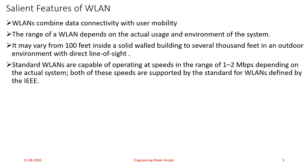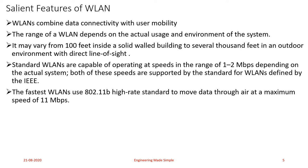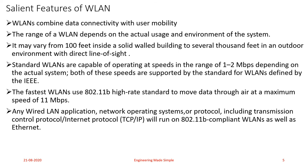As standard, wireless LANs are capable of operating at speeds in the range of 1 to 2 Mbps depending upon the actual system. Both of these speeds are supported by the standards defined by IEEE for WLANs. The fastest LANs use the 802.11b High Rate standard, which provides high data rates — that is why it is named the High Rate standard — and it can give speeds up to 11 Mbps.